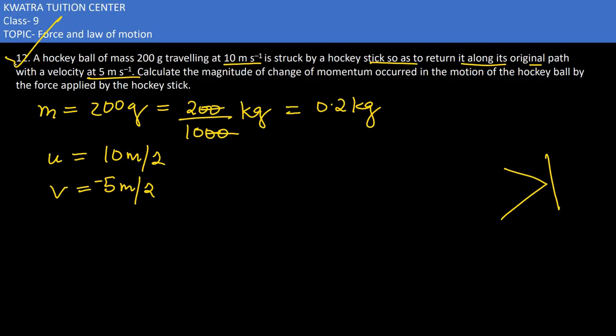Now what would be the initial momentum mu? Initial momentum would be m into u, 0.2 into 10 would be 2. What is the unit? It is kg meter per second.